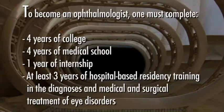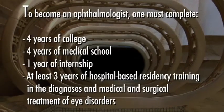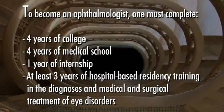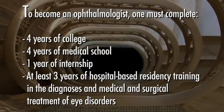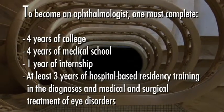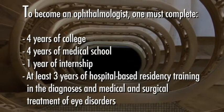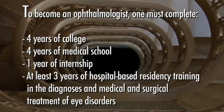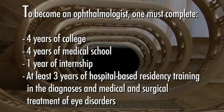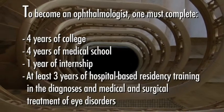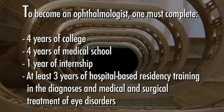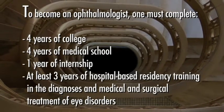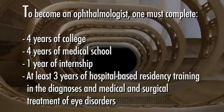To become an ophthalmologist, one must complete four years of college, four years of medical school, one year of internship, and at least three years of hospital-based residency training in the diagnosis and medical and surgical treatment of eye disorders.